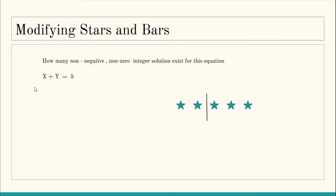If we place the bar completely to the right it corresponds to the solution 0, 5 — but now 0, 5 is not a valid solution. To prevent getting that solution we simply stop the bar from going completely to the left or completely to the right. If the bar goes completely to the right then the solution is 5, 0, where y assumes the value 0 which is again invalid. So we need to stop the bar from reaching those two extreme positions.